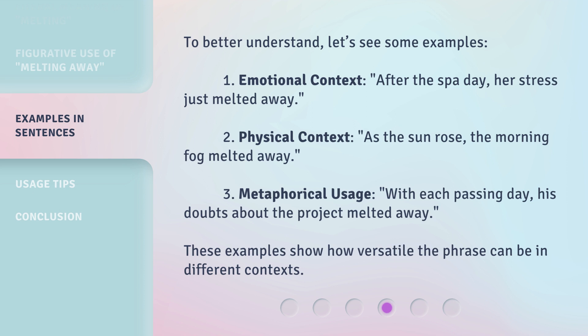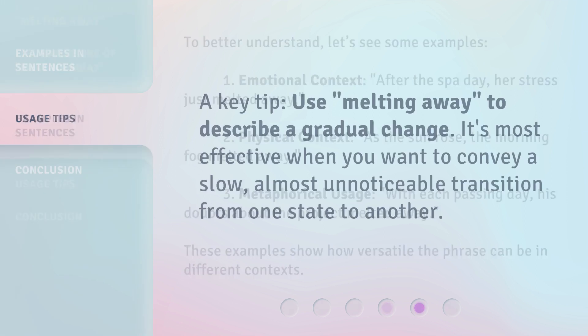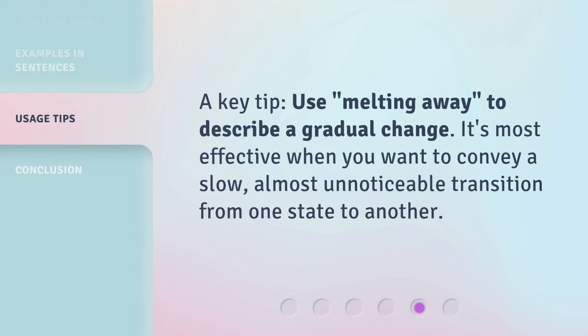These examples show how versatile the phrase can be in different contexts. A key tip: use 'melting away' to describe a gradual change. It's most effective when you want to convey a slow, almost unnoticeable transition from one state to another.